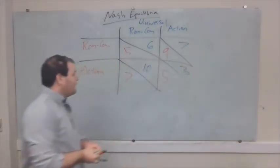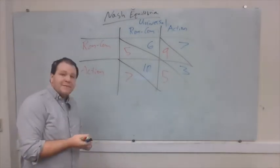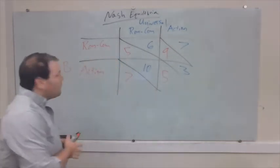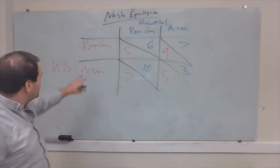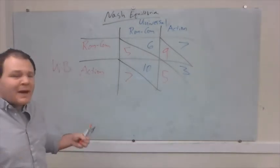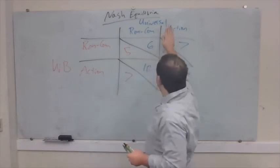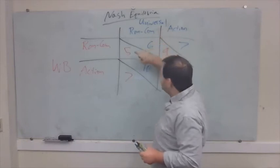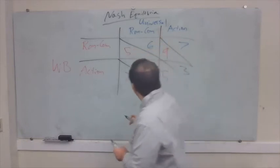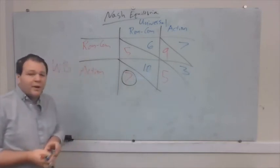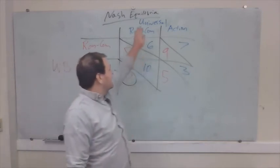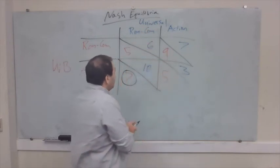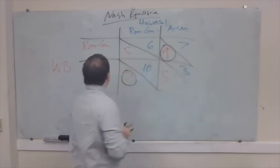Given these payoffs, what can we say about which movies are going to be made by which companies? We'll figure out each company's best response to each of the other company's possible moves. If I'm Warner Brothers and I know Universal is going to make a rom-com, I'm deciding between $5 million and $7 million — clearly I'm better off making an action movie. And if I knew Universal was going to make an action movie, I'd make $9 million from a rom-com versus $5 million from an action movie — so my best move is to make a rom-com.